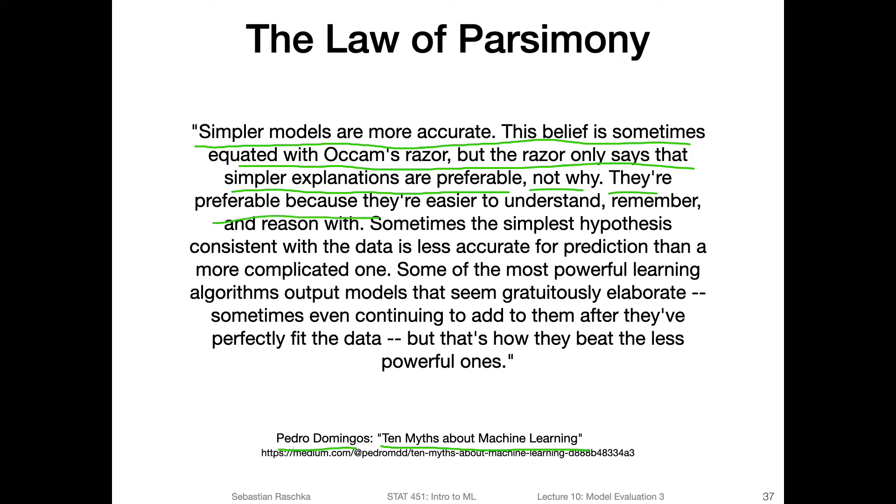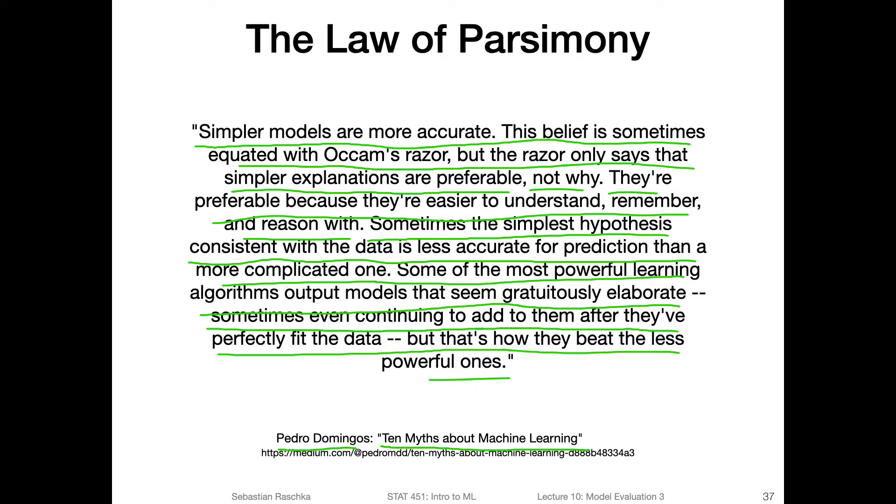He says they are preferable because they're easier to understand, remember, and reason with, which is something I agree with. A simple model is usually easier to explain its behavior. Sometimes the simplest hypothesis consistent with the data is less accurate for prediction than a more complicated one. Some of the most powerful learning algorithms output models that seem gratuitously elaborate, sometimes even continuing to add to them after they've perfectly fit the data. But that's how they beat the less powerful ones. Usually, the more complicated the model, the better it may perform, especially during evaluation, because there can be some slight overfitting effects even if we use cross validation techniques. If we find that two models perform equally well within a margin, I would go for the simpler one.